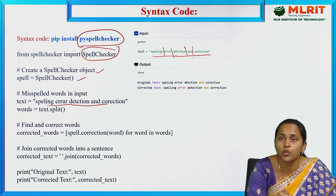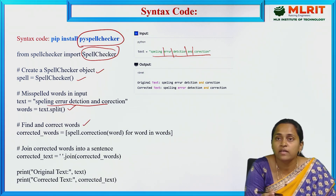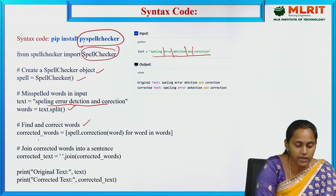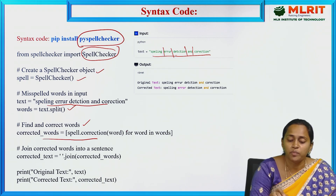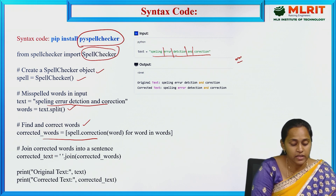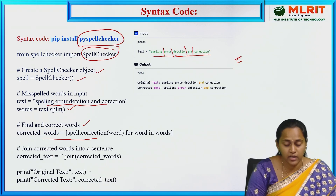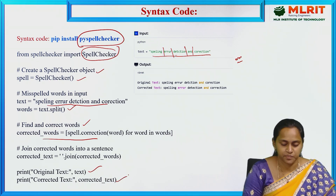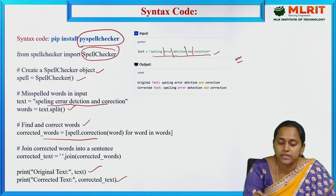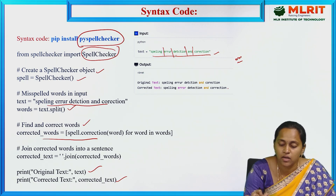After splitting into tokens, we find the misspelled words and then find the correct words. The spell correction automatically highlights wrong words — similar to how a red underline appears. After finding the misspelled words, we join the corrected words back into a sentence. For example, input 'spelling error detection' — with 'error' and 'detection' flagged — outputs 'spelling error detection and correction'.